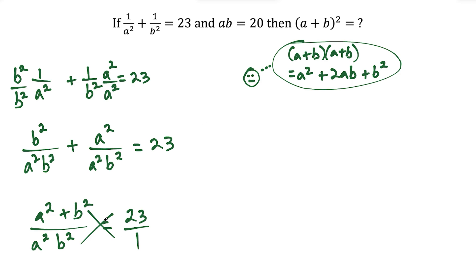So now once again, we cross multiply. We're going to have a squared plus b squared equals 23 times a squared b squared. But notice in order for me to be able to factor this or write this in the form of a plus b in parentheses squared, I need to have this middle piece here of 2ab.